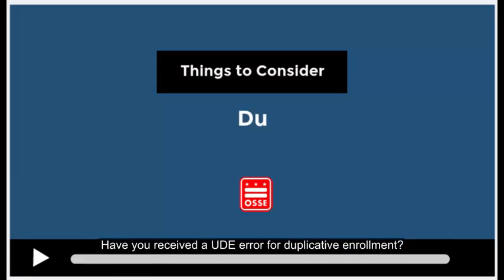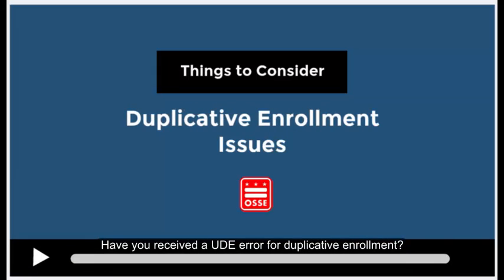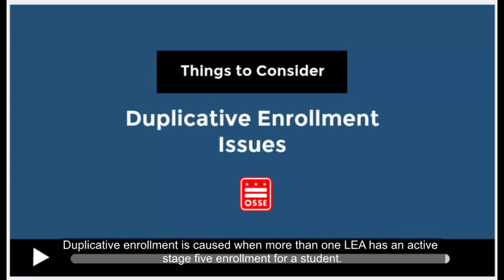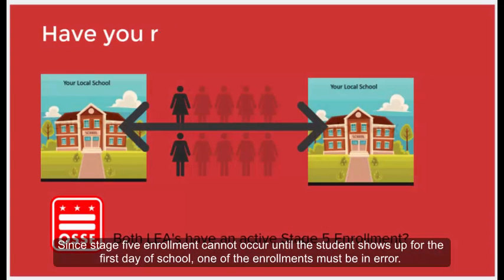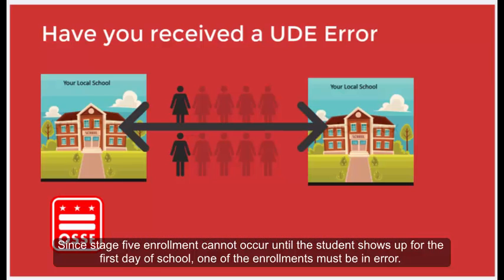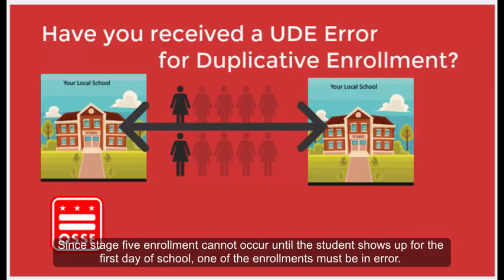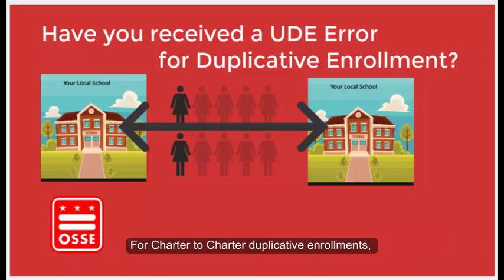Have you received a UDE error for duplicative enrollment? Duplicative enrollment is caused when more than one LEA has an active Stage 5 enrollment for a student. Since Stage 5 enrollment cannot occur until the student shows up for the first day of school, one of the enrollments must be in error. For charter to charter duplicative enrollments,